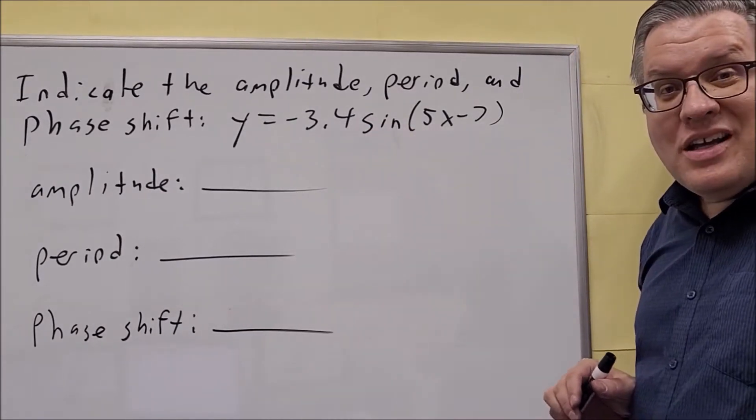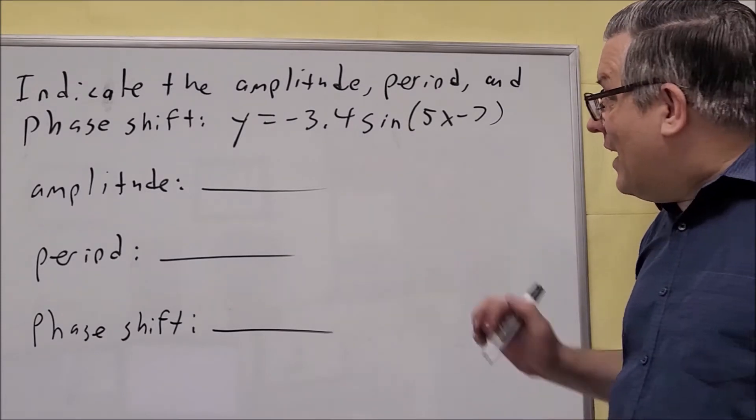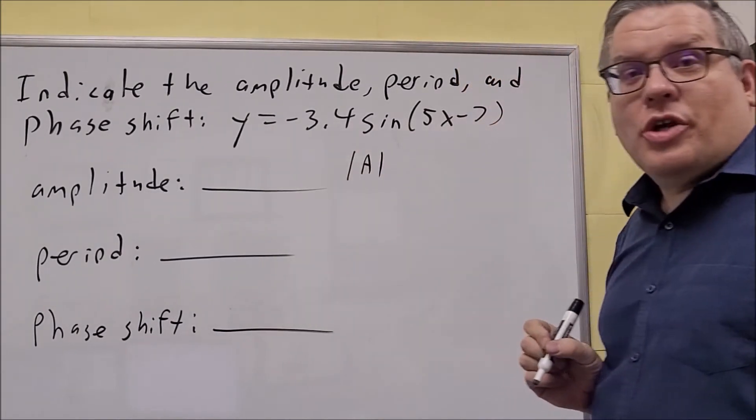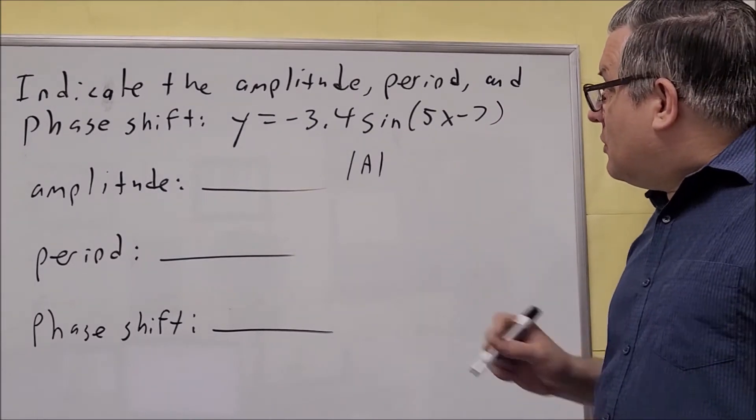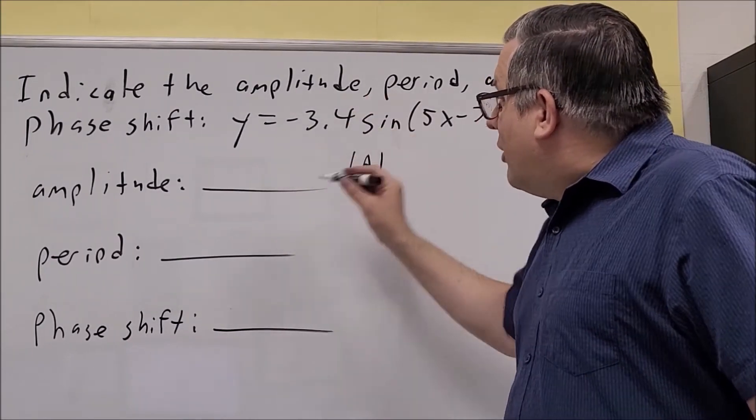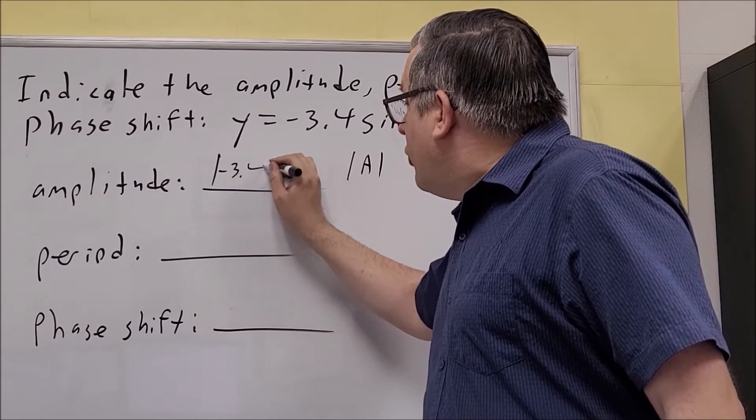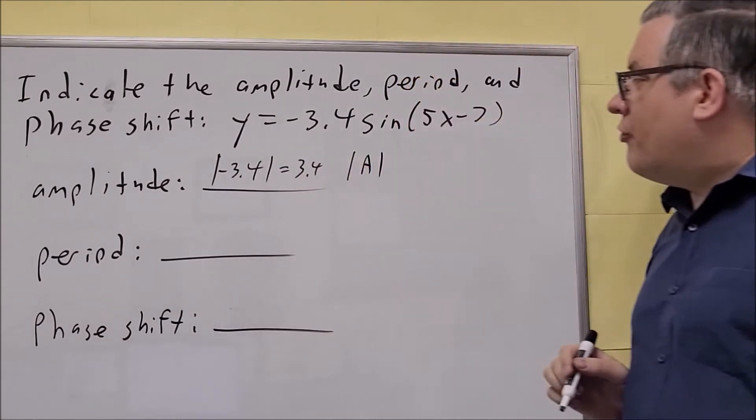Amplitude is going to be, it's the absolute value of A. So I'm going to write the formulas down here as we go through so we can be reminded of that. The absolute value of the A value, the absolute value of negative 3.4, will be 3.4.